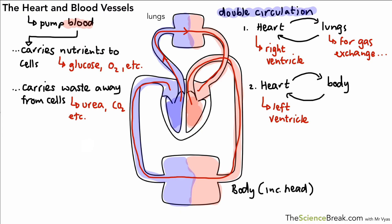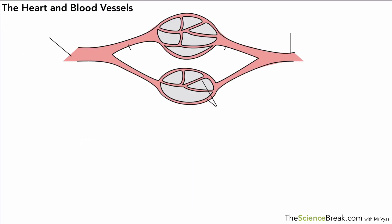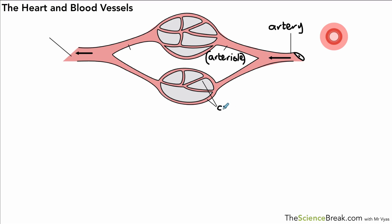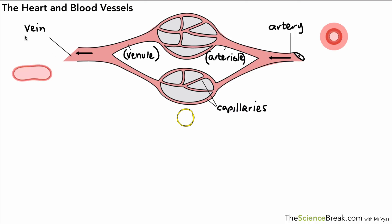Next we look at the details of the blood vessels: arteries, veins, and capillaries. Blood flows from right to left on screen. The artery is the blood vessel from the heart. It branches into smaller vessels called arterioles — not in the spec but good to know. Those arterioles branch into tiny capillaries, which join up to make venules, and those venules join to make veins.